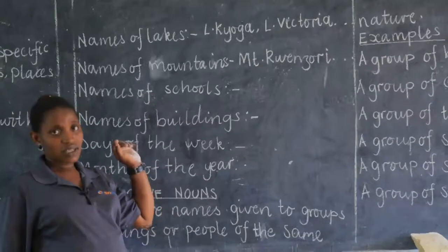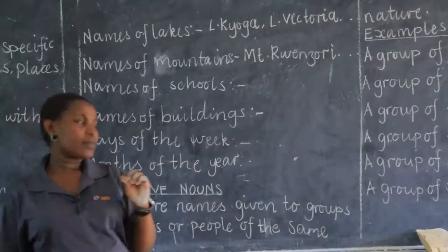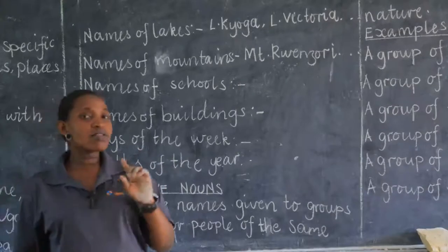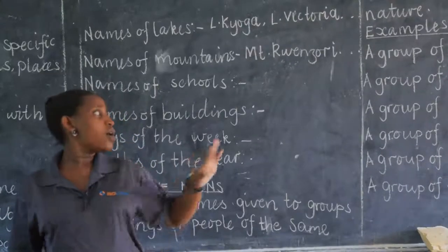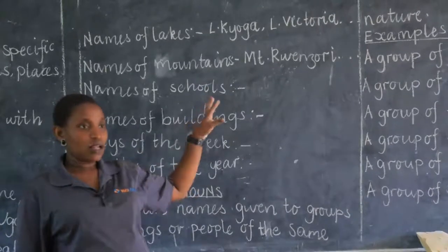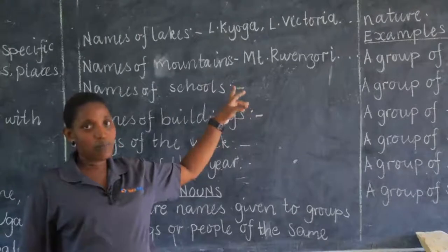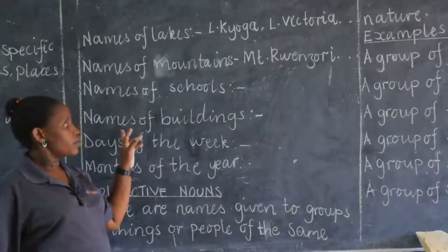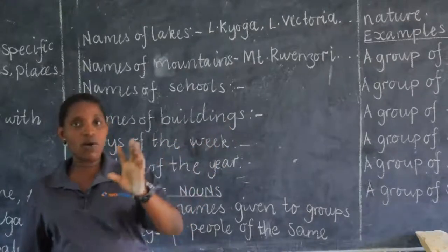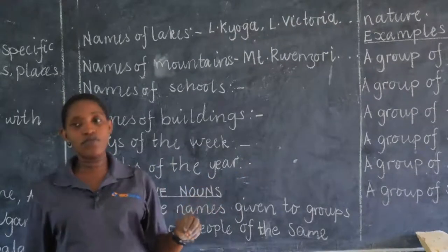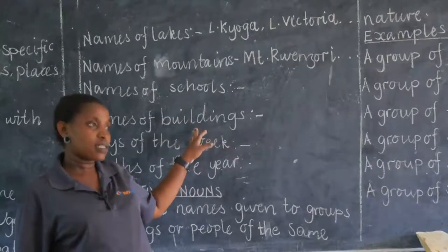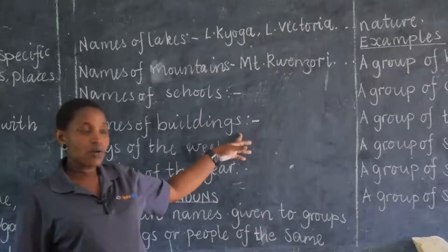Names of schools — when you say 'schools,' that is a general name. But when you mention a particular school, for example Kampala Quality Primary School, all of those words — Kampala, Quality, Primary, School — must be in capital letters. Then you come to names of buildings. When you go to town, you will find Clock Tower and Namaganda Plaza. Even at your home, if they name your building, it will be a proper noun and must begin with a capital letter.